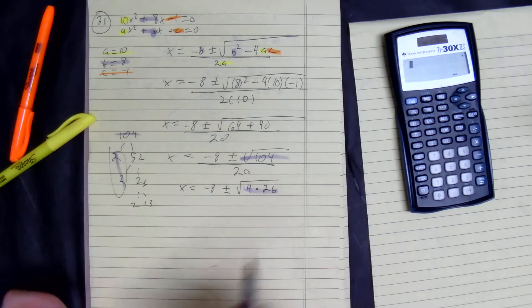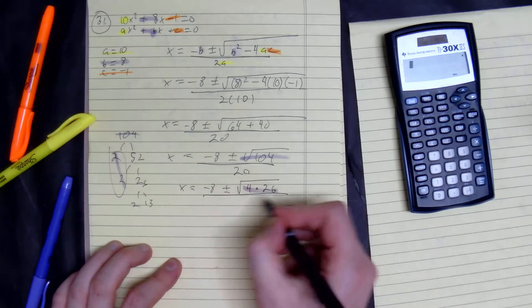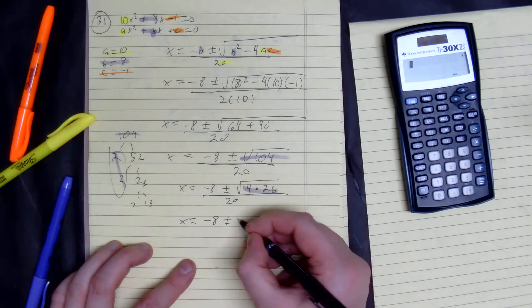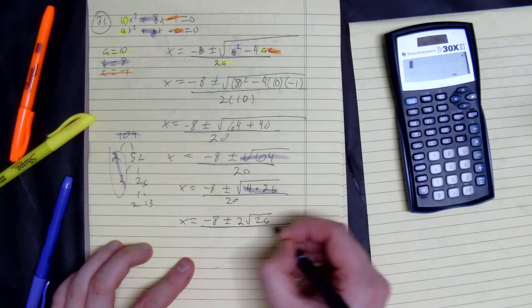And we know 4 is square rootable, so we get x equals negative 8 plus or minus 2 square root of 26 divided by 20.